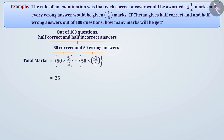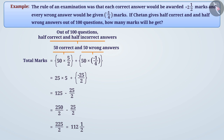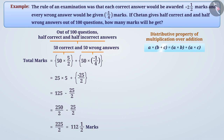By simplifying, we get twenty-five multiplied by five plus minus twenty-five by two marks, which equals one hundred twenty-five by two marks, which equals one hundred twelve and a half marks. Since the sum of rational numbers can be distributed on a multiplication — a multiplied by b plus c is equal to a multiplied by b plus a multiplied by c.